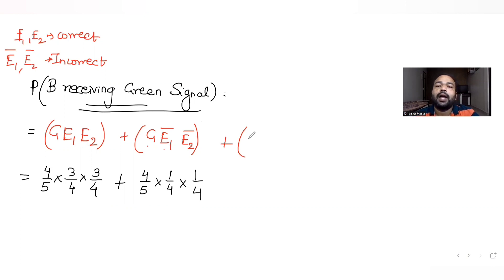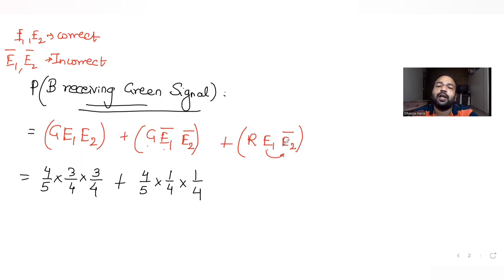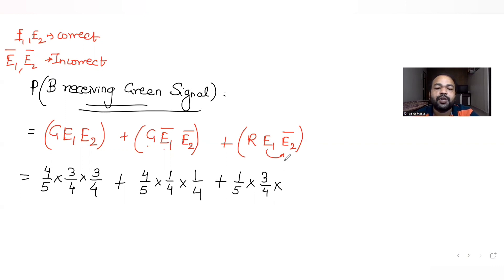The third case: the original signal is red, and station A correctly receives it as red, with probability 3 by 4. Then station A transmits an incorrect signal to station B, so station B receives a green signal instead of red. The probability for this case is 1 by 5 times 3 by 4 times 1 by 4.